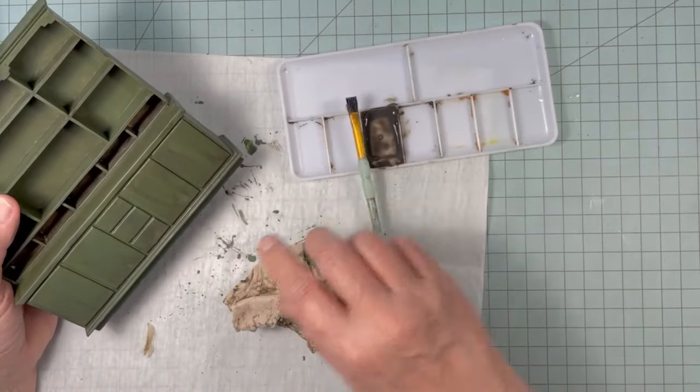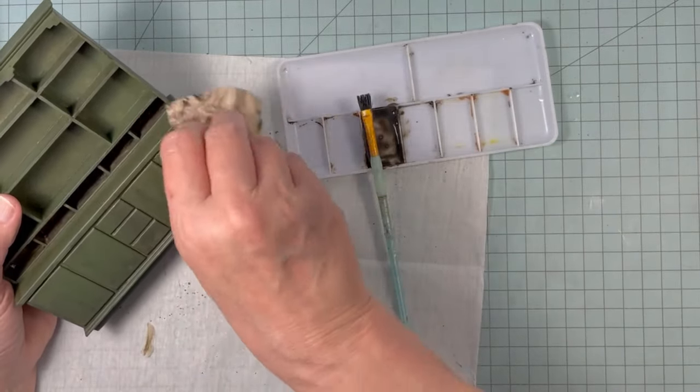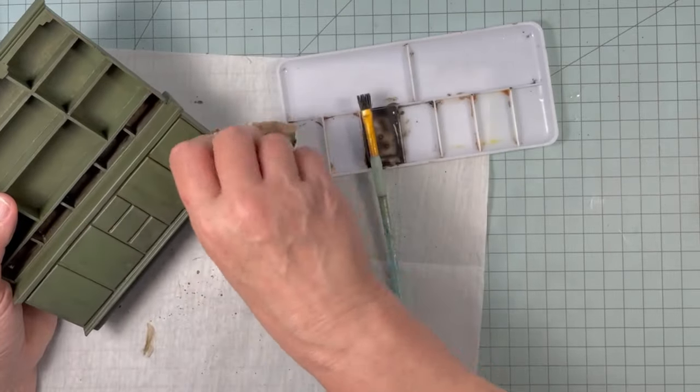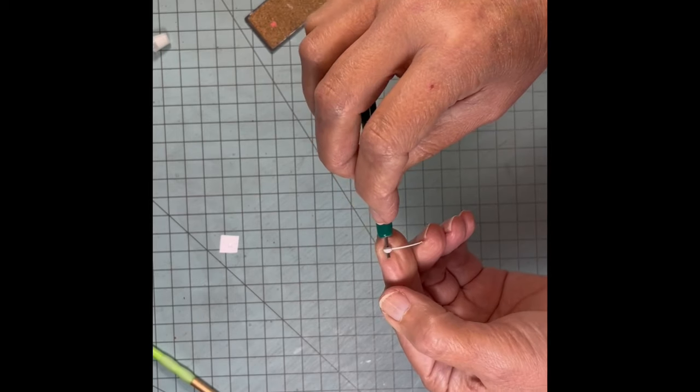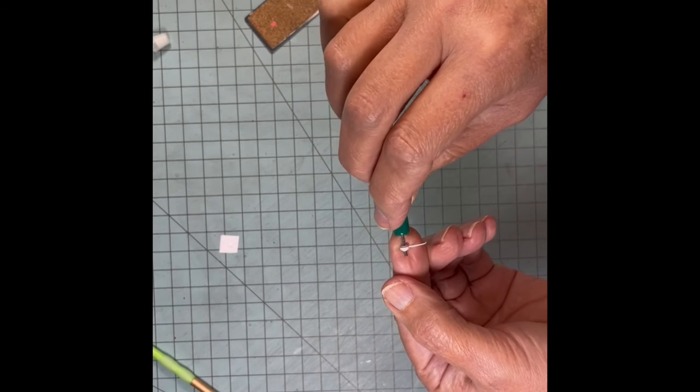Here I'm dirtying it up with some brown paint mixed with water. I forgot to film myself making the little drawers. Here I'm rolling up some paper to make some little porcelain looking knobs.